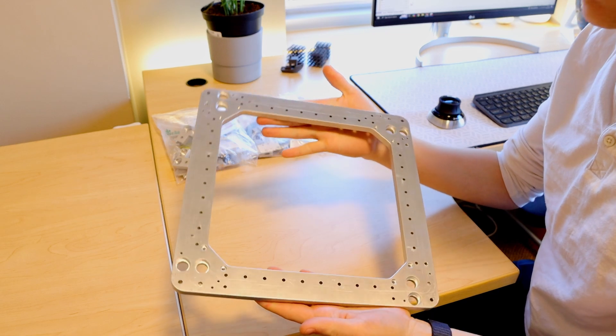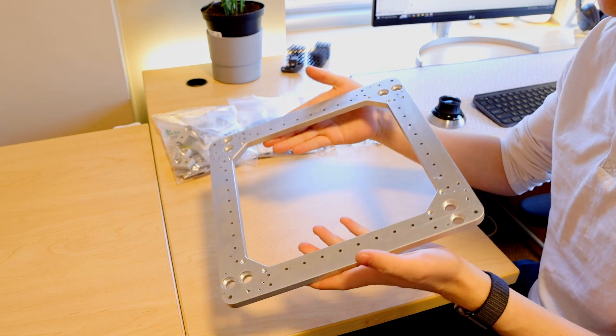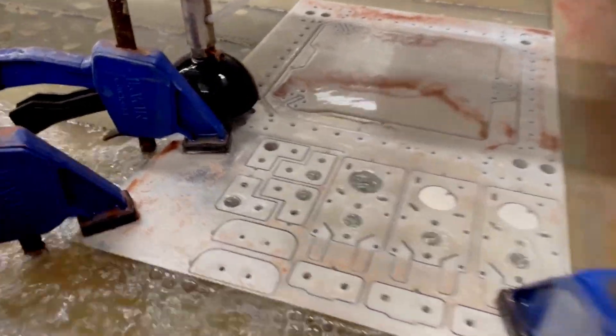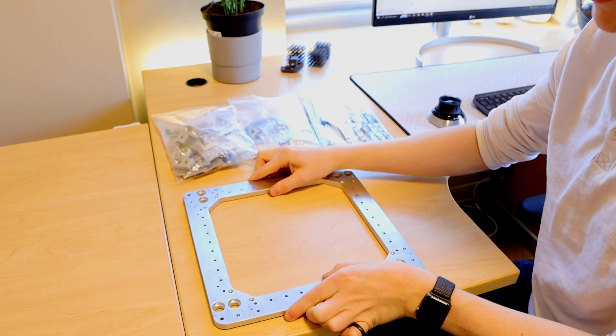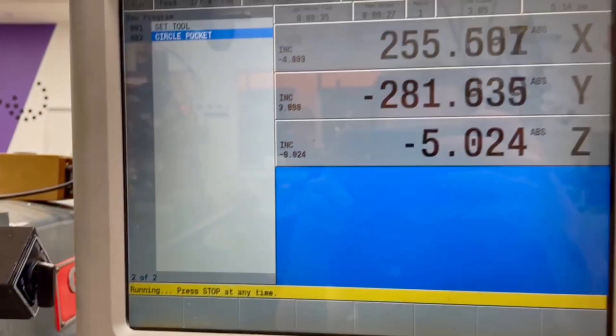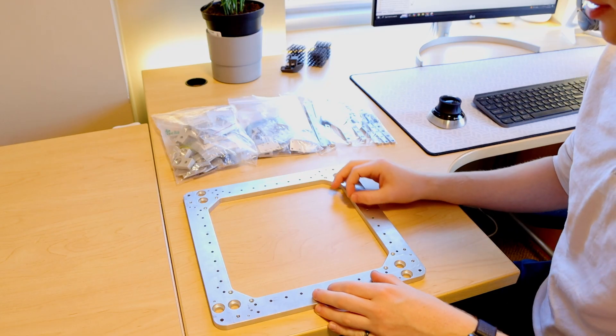So this is the tooling plate that forms the main reference surface for the XY gantry. It was cut on a water jet of a piece of cast aluminum tooling plate and I've used the manual mill to add some additional features like these bearing bores here and also some precision reamed dowel pinholes which I'll be using to align some of the critical rails.